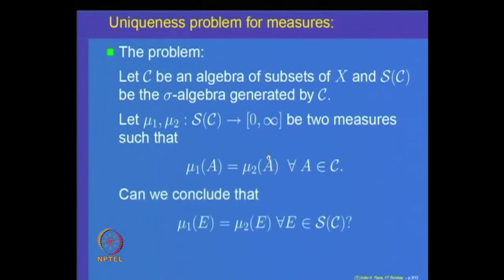The question is: can we conclude that mu_1(E) = mu_2(E) for every element in the sigma algebra generated by C? This is a general uniqueness problem which plays a role later on when we extend measures to general settings.